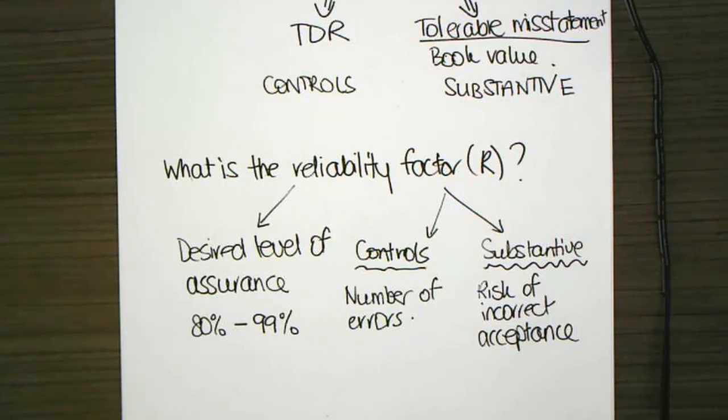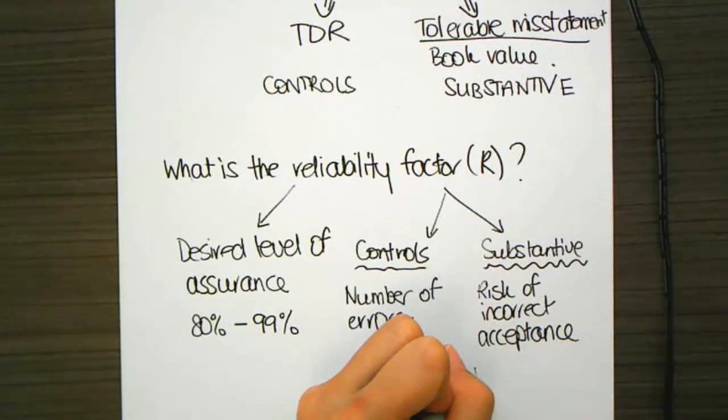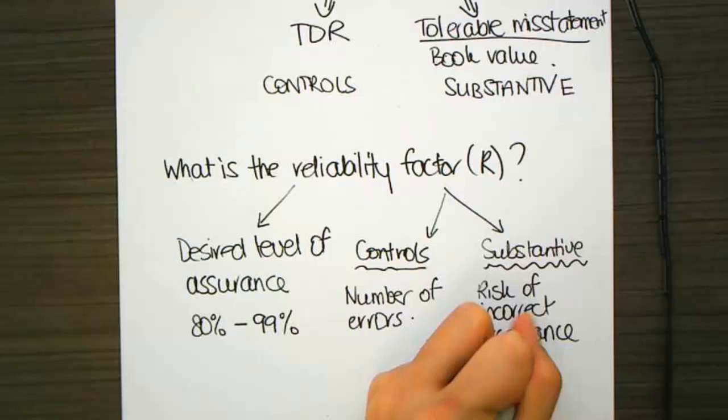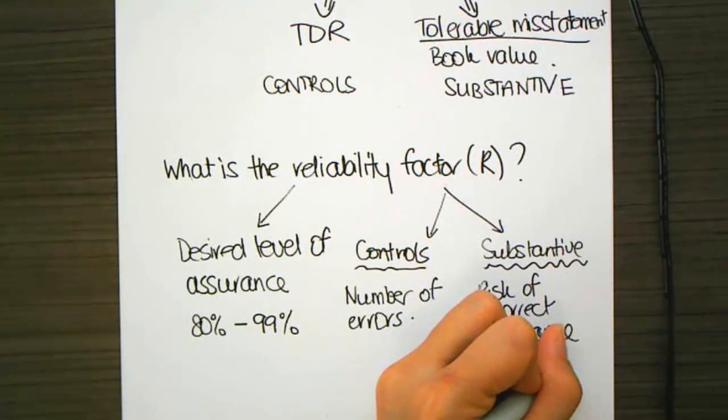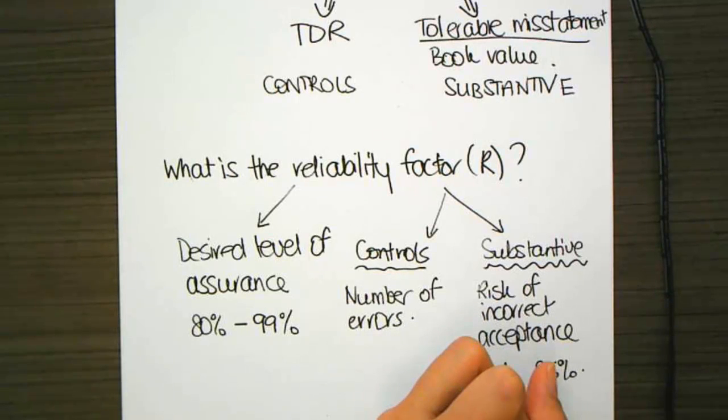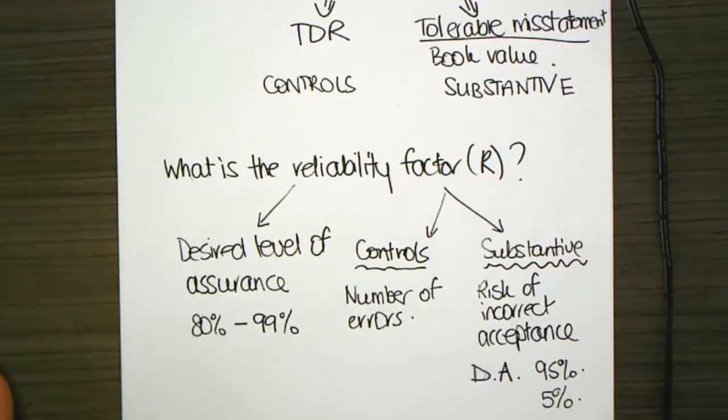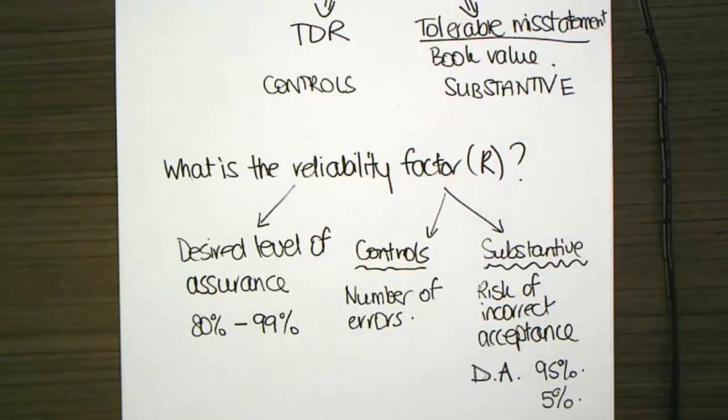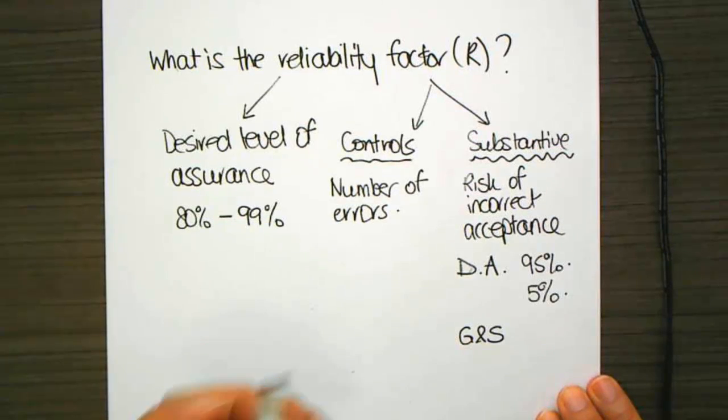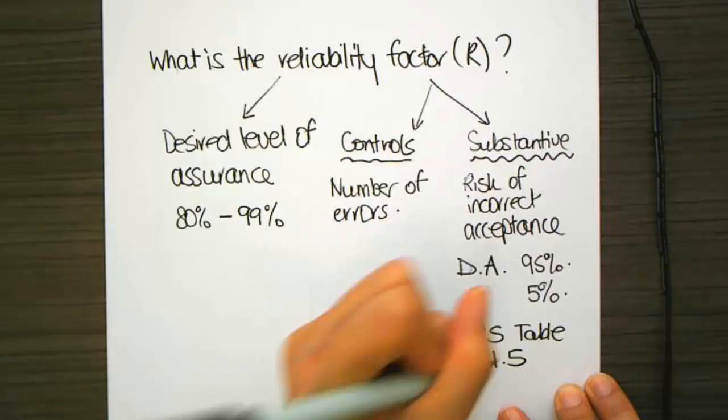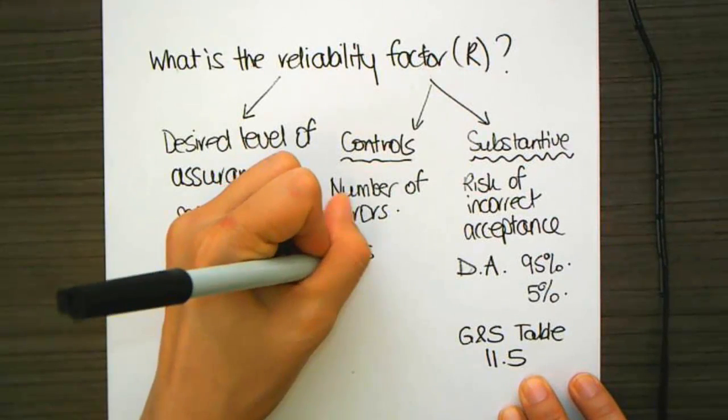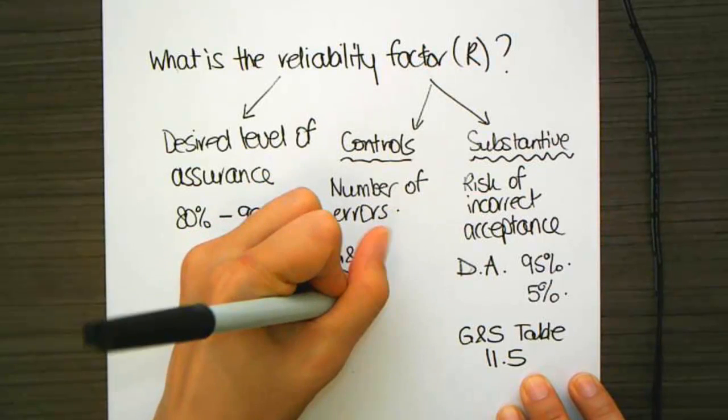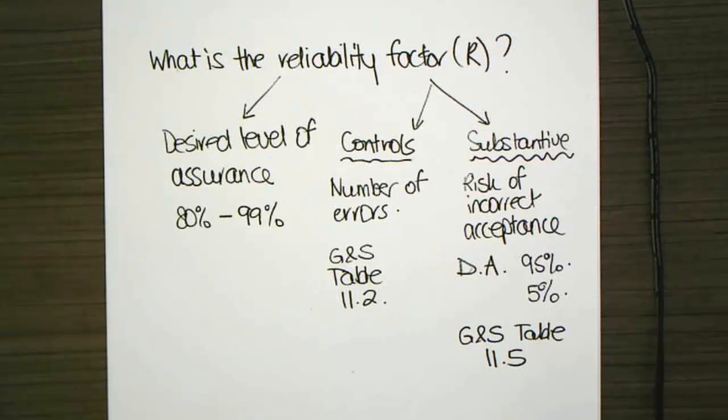Now, so we use this reliability factor, and there are two tables that we'll use in Gain and Simnet. Table 11.5 for substantive, and for controls, in Gain and Simnet, they use Table 11.2. Now, for my students, I would never expect them to be able to memorize these sorts of tables. If you needed to use one of those tables in an examination situation, for example, I'd give you the table to use. So, the reliability factor is based on our desired level of assurance and information either about the number of errors or the risk of incorrect acceptance. And if we use one of those two tables, they will actually give us a reliability factor number that we're going to go back and use in our calculation.